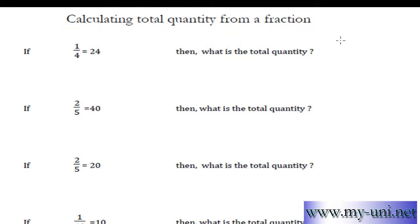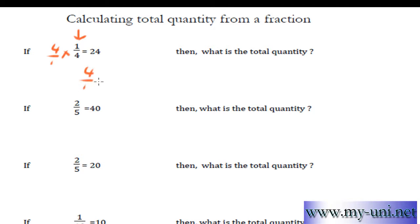It is quite easy. To find out the answer, you simply have to change this side of the equation to a whole quantity, to a quantity of 1. And to do that, you simply multiply this part of the equation by a reciprocal fraction. So this is one-fourth — the reciprocal fraction is 4 over 1, the exactly opposite of it. That would be 4 over 1 multiplied by 1 over 4, which is equal to 24.